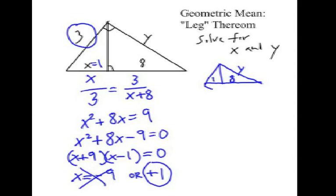Which, of course, means a total of 9 for the hypotenuse. So, we're going to use the geometric mean leg theorem in relation to the other leg.